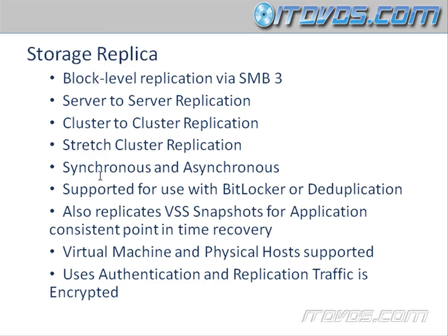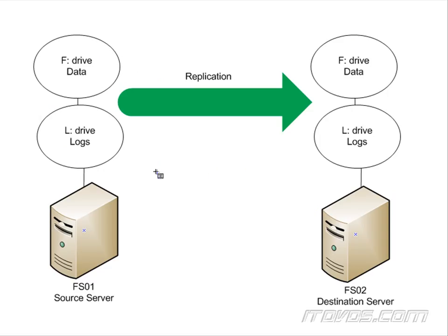There are going to be two types of replication we can perform here: synchronous and asynchronous. With synchronous, which is considered zero data loss, you won't get data loss if something happened to FS01 — FS02's F drive will be completely up to date. The reason is that when a file or a block is changed on our F drive, it's not seen as committed until it's also written to the F drive on FS02, the destination. Once that block is written to FS02, FS02 sends back an acknowledgement, and then that block is considered changed.